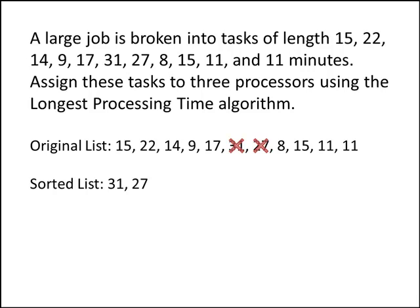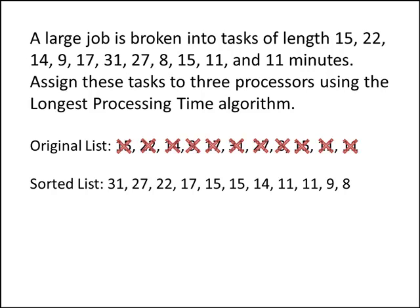So the next longest task is 27, then 22, then our 17, two 15s, a 14, our two 11s, the 9, and the 8. One thing I also like to do at the end is to count the number of things in the original list — in this case there were 11 different tasks — and make sure that my sorted list has that same number of tasks on it. A quick check here tells us that we didn't miss anything.